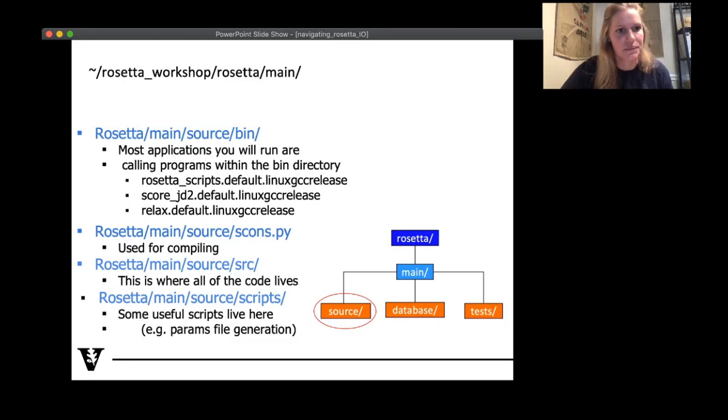This also in this Rosetta main/source/scons.py, this is how you compile. So you guys have already run this command if you guys have downloaded the source code, and then you had to compile it in order to make these applications. So if you are familiar with computer code, specifically C++ is what Rosetta is written in, primarily in this main/source/src, that's where all of the code lives. So if you're interested in a specific protocol, and you are familiar with code, I would encourage you to look in that. It's kind of fun. So then you have main/source/scripts. So there's some useful things here. So again, this params file, which I briefly mentioned, for small molecule stuff, this is where that lives, for example.